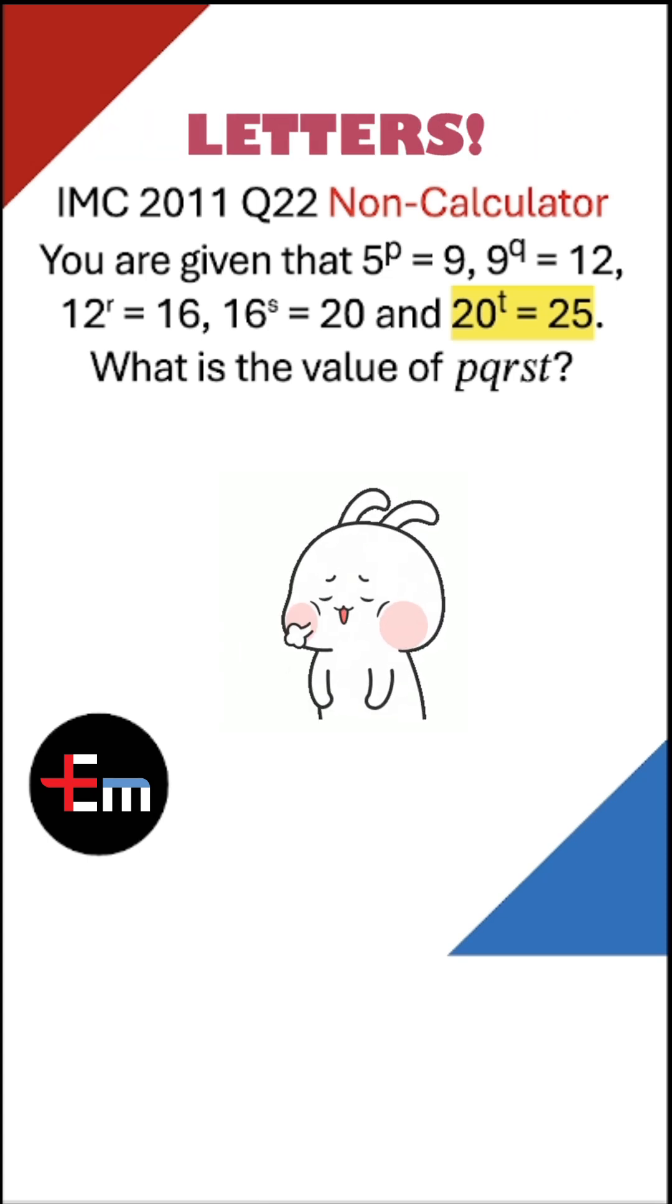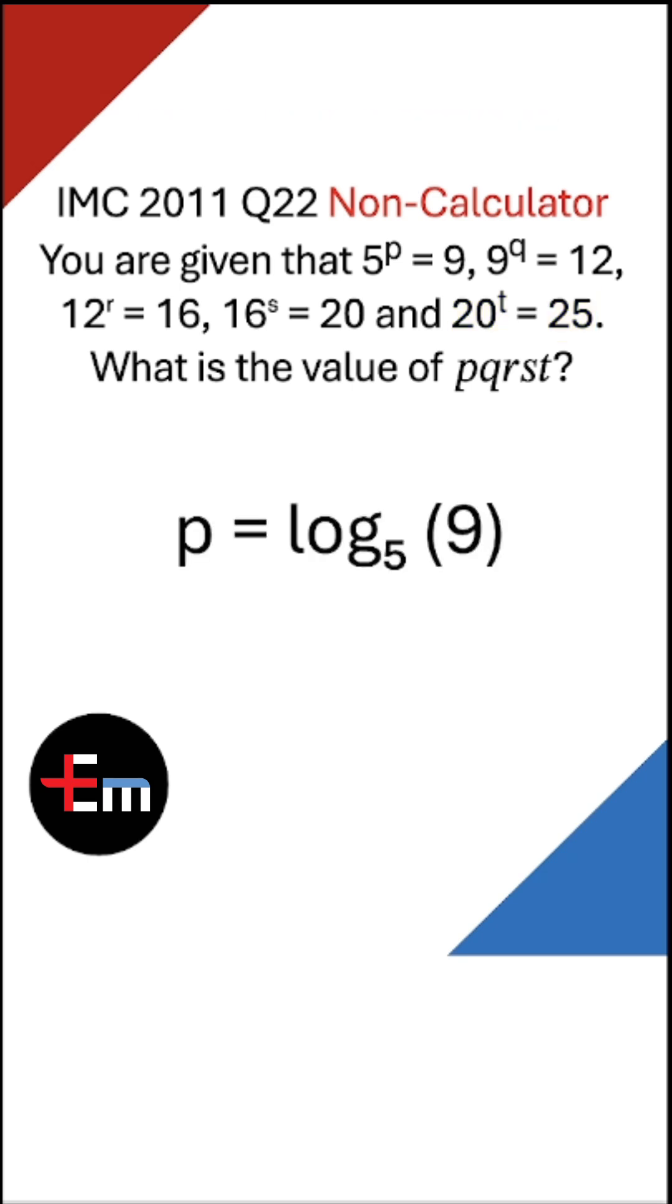That's a lot of numbers and letters. What's pqrst? Surely we plug it into logarithms and see what each letter is first, right? Log 5 brackets 9 equals... wait a minute! It's non-calculator, so how do we solve it?